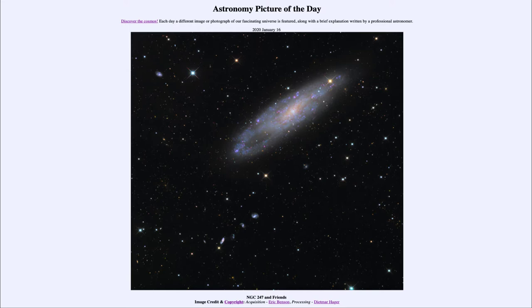This is an example of a spiral galaxy and NGC 247 is its catalog designation. It's a relatively small spiral galaxy, a little bit smaller than our Milky Way. Our Milky Way is about 100,000 light years across and this one is only about 70,000 light years across.